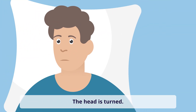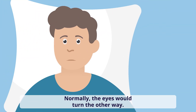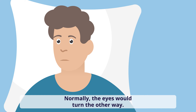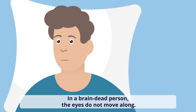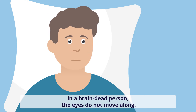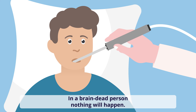The head is turned. Normally, the eyes would turn the other way. In a brain dead person, the eyes do not move along. Mucus is sucked from the trachea, which gives a cough stimulus. In a brain dead person, nothing will happen.